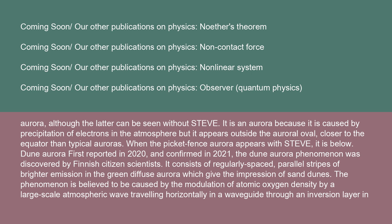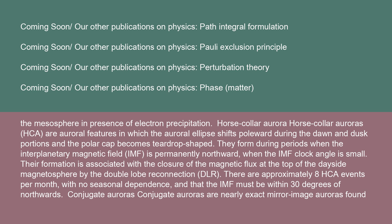First reported in 2020 and confirmed in 2021, the dune aurora phenomenon was discovered by Finnish citizen scientists. It consists of regularly spaced parallel stripes of brighter emission in the green diffuse aurora, giving the impression of sand dunes. The phenomenon is believed to be caused by the modulation of atomic oxygen density by a large-scale atmospheric wave traveling horizontally in a waveguide through an inversion layer in the mesosphere in the presence of electron precipitation. Horse-collar auroras (HCA) are auroral features in which the auroral ellipse shifts poleward during dawn and dusk, forming a teardrop-shaped polar cap, associated with a northward interplanetary magnetic field (IMF) and double-lobe reconnection (DLR).